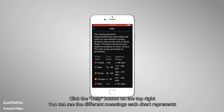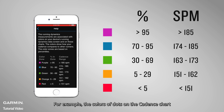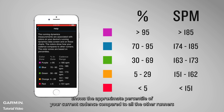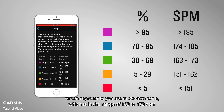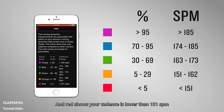You can see the different meanings each chart represents. For example, the colors of dots on the cadence chart show the approximate percentile of your current cadence compared to all other runners. Purple means your cadence is higher than 95% of runners, which is above 185 SPM. Green represents you are in the 30 to 69% zone, which is in the range of 163 to 173 SPM. Red shows your cadence is lower than 151 SPM.